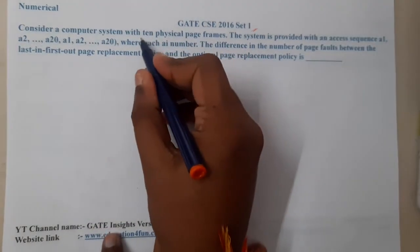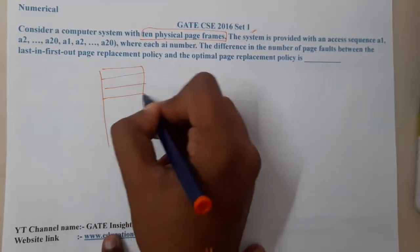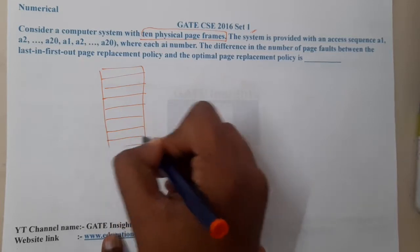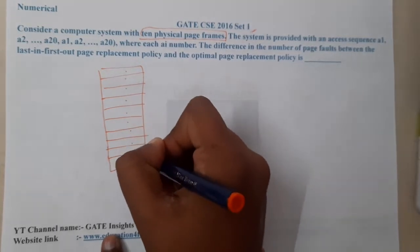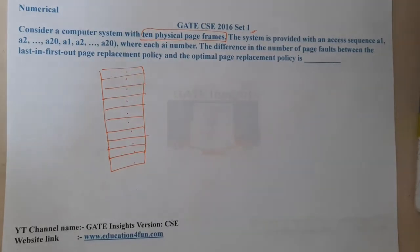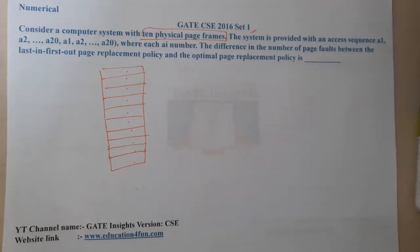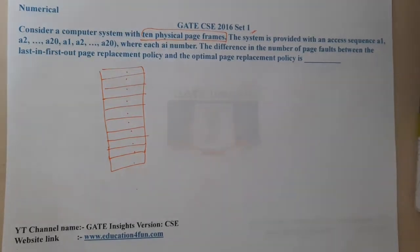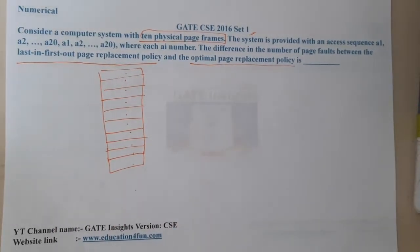So they are saying the total entries are 10 — frames 1 through 10. The system is provided with an accessing sequence a1 to a20, and again a1 to a20, where each ai is a page number. The question asks for the difference in the number of page faults between the Last-In-First-Out page replacement policy and the Optimal page replacement policy.